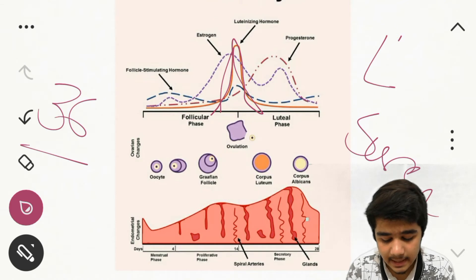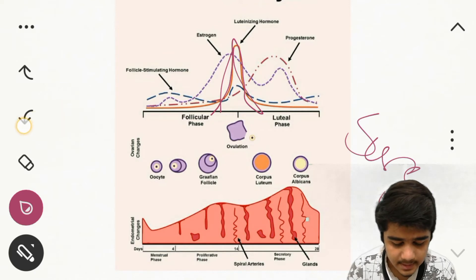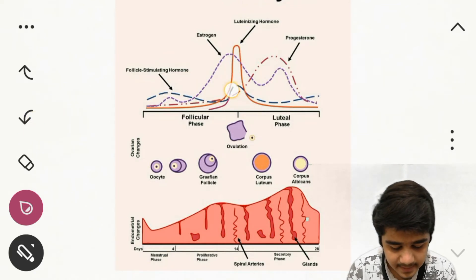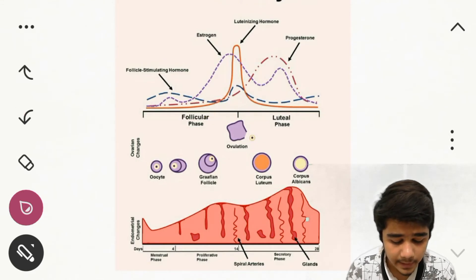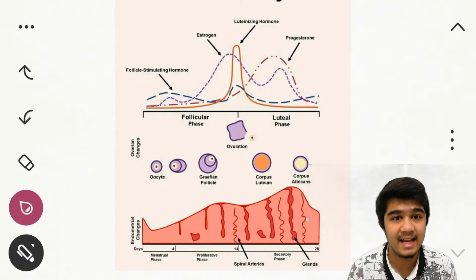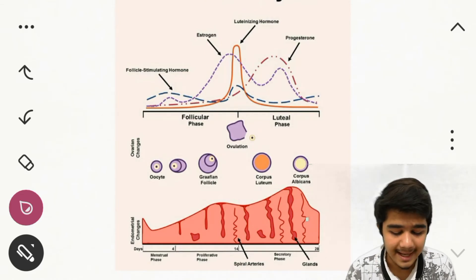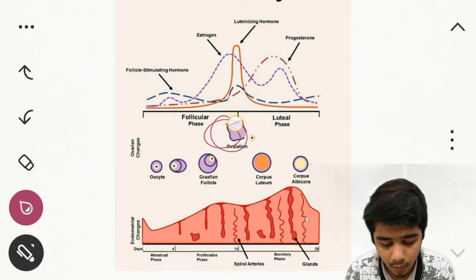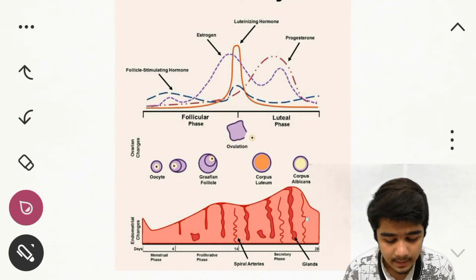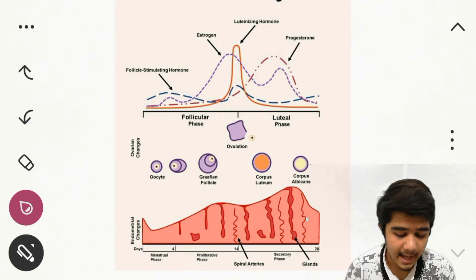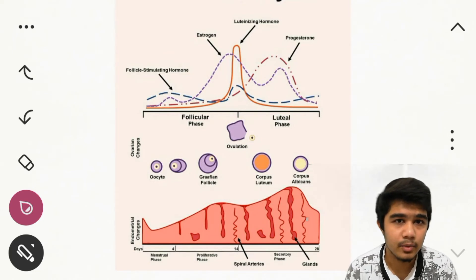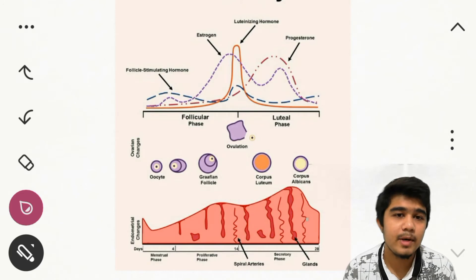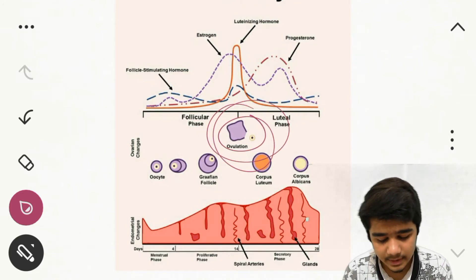In the ovulation phase, FSH also increases — you can see both the FSH curve and LH curve rise. LH and FSH lyse the wall of the Graafian follicle and the egg is released. The egg then goes to the fallopian tube. If sperm is present, the egg and sperm combine and fertilization occurs. If sperm is not there, the egg degenerates. Ovulation occurs at day 14.